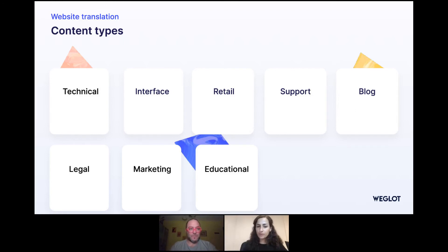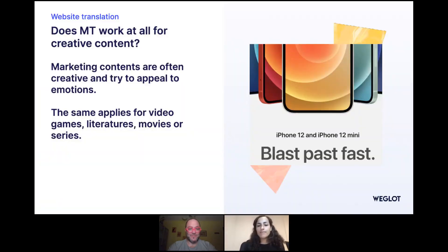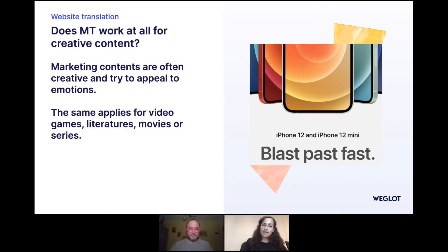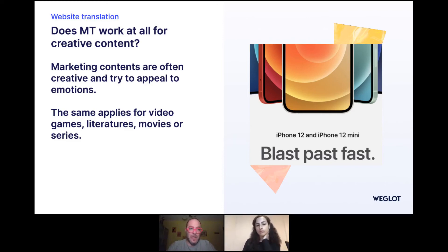Let's talk about where machine translation doesn't perform so well — so we're talking about marketing content overall. This is content that is meant to give you feelings, to make you want to sell something, make people feel like they want your product or interact with your services. Why does the machine not perform so well for this content? The reason is the same why some translators are better with technical content rather than marketing or creative content — it's really a matter of being able to transfer the message rather than the exact words in the target language. Machine translation is not really good at giving you a completely different message from the source. If you need to touch the same emotional chords in the target language as in the source, it's really difficult for the machine.